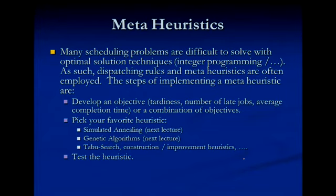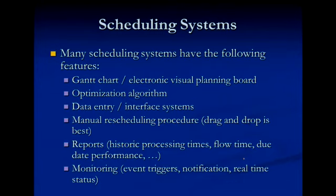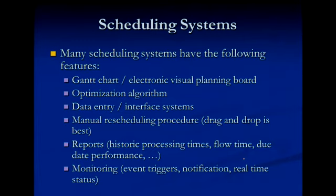Many scheduling problems are difficult to solve, but you can develop optimal solution techniques: integer programming, dispatching rules, metaheuristics. You want to first develop an objective — typically people care about tardiness, number of late jobs, average completion time, or a combination. Then find your favorite heuristic: simulated annealing, genetic algorithms, taboo search. Scheduling systems typically have a Gantt chart or electronic planning board, some optimization procedure, manual data entry, rescheduling capability — typically drag and drop — reports for historic times and flow due dates, and monitoring. Maybe if a job's running late, you send a message.